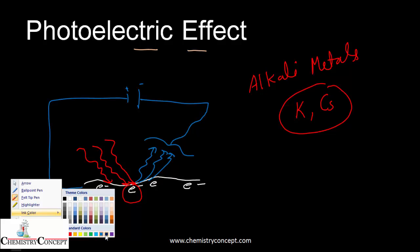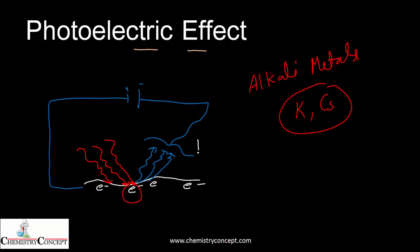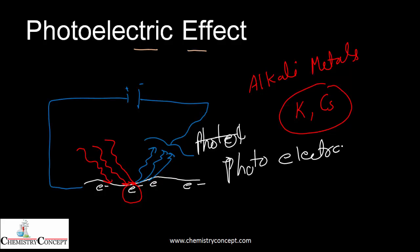The electrons coming out from the surface are called photoelectrons. So if someone asks what is the photoelectric effect: it is the effect where light strikes the surface of a metal, electrons absorb that energy, and come out from the surface. The criteria is that those metals must have very low ionization energy.